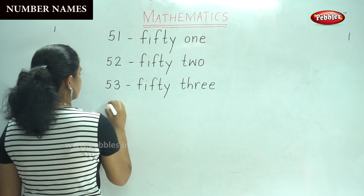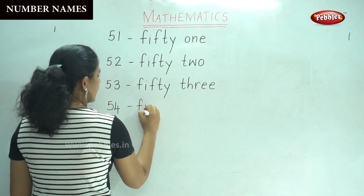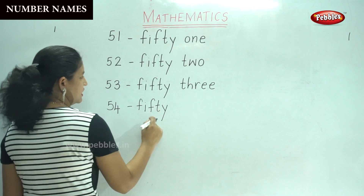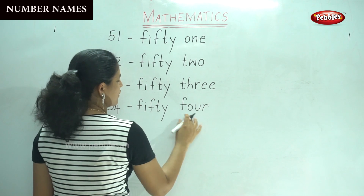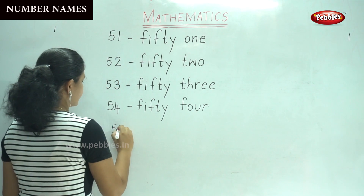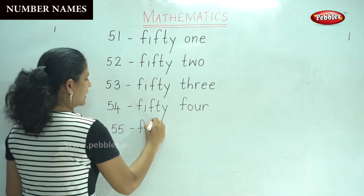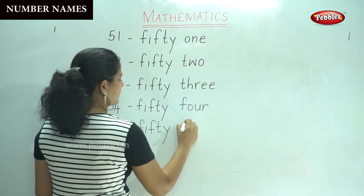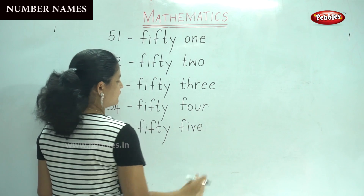54: F-I-F-T-Y — fifty. F-O-U-R — four. 54. Next, 55: F-I-F-T-Y — fifty. F-I-V-E — five. 55.